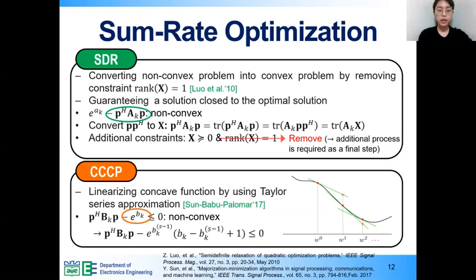The idea of CCCP is to linearize the concave function through first-order Taylor series approximation. By linearizing second term based on b_k to the s-1, the constraint transforms to convex. S refers to iteration number.